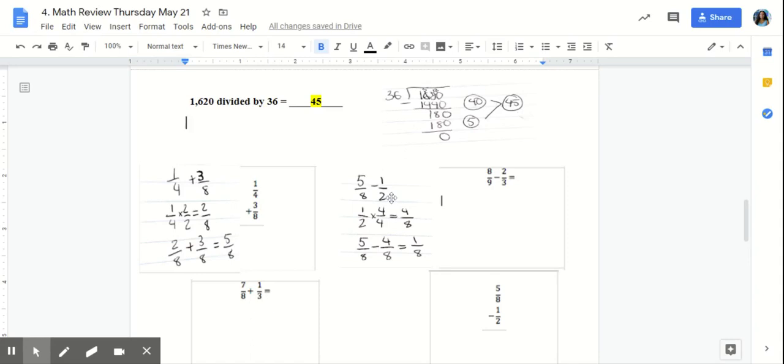Again, we know that we can't subtract fractions that don't have like units. So again, we know that 2 is a factor of 8. So if we multiply by 4/4, we can get a common denominator. 1/2 times 4/4 equals 4/8. Now we're ready to subtract. 5/8 minus 4/8 equals 1/8.